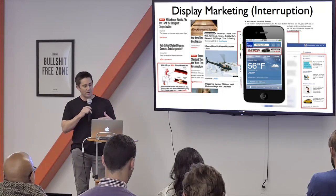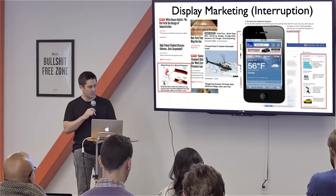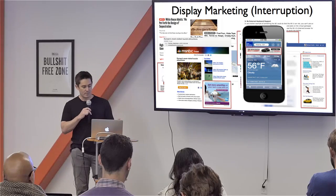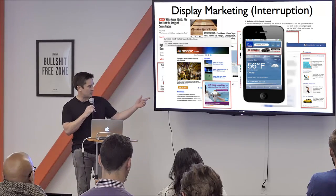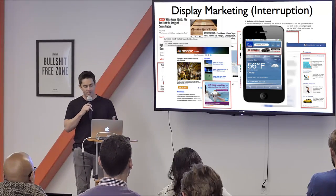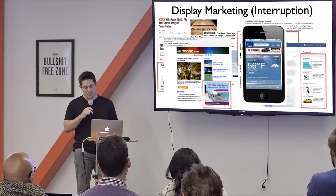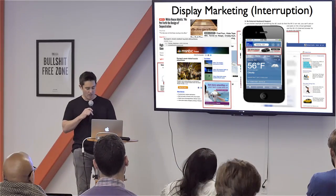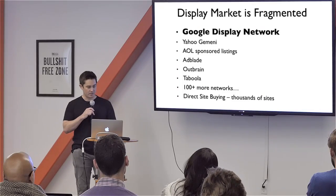Mobile ads, whether in-app or on the mobile web, are a type of display. And ads targeted in an email newsletter — like through Live Intent, which is a big email display platform — all of this is the idea of interruption marketing.